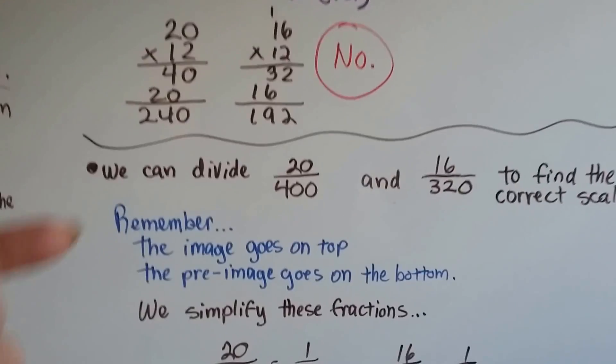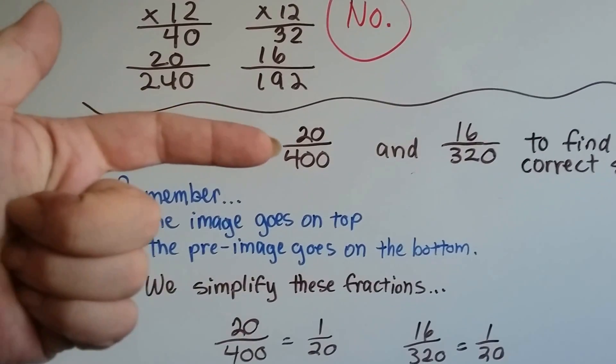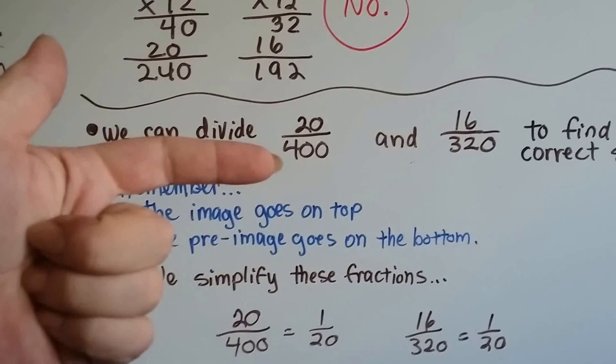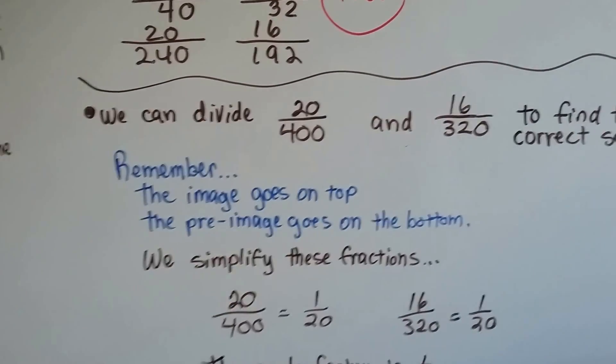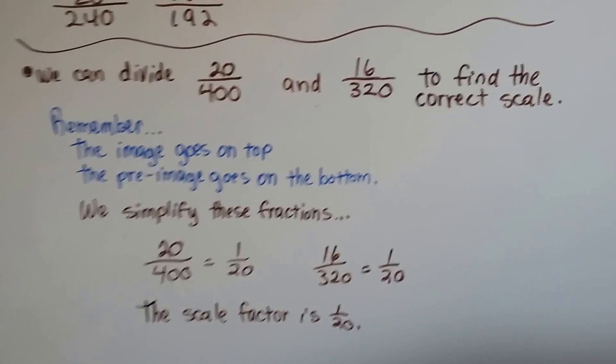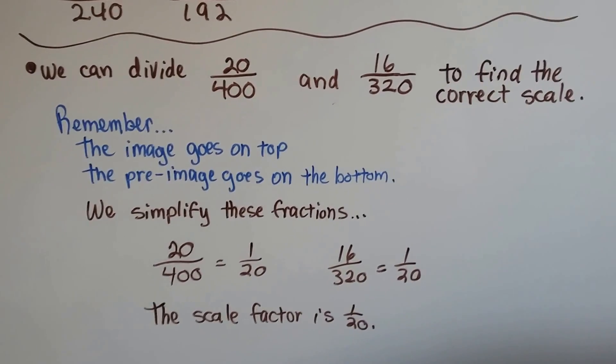All we have to do is write the image on top and the pre-image on the bottom. What it needs to be is 20. What it was was 400. Remember we did that a couple videos ago? If we write it this way, all we have to do is simplify the fraction.